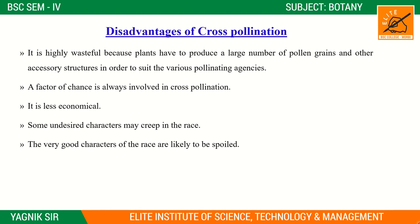Those are the disadvantages of cross pollination. The entire topic of pollination is now complete. In the next lecture we will cover types of ovules, female gametophyte, and the fertilization process. After pollination, the pollen grain germinates and the fertilization process follows, after which different types of ovules will be discussed.